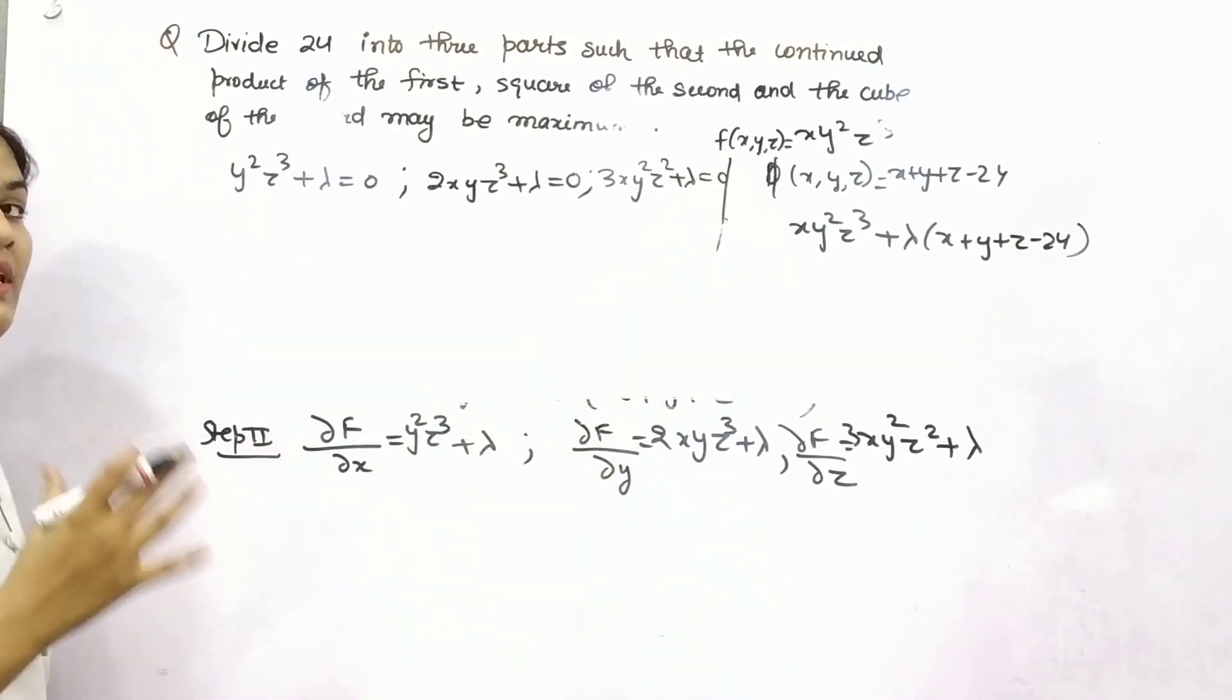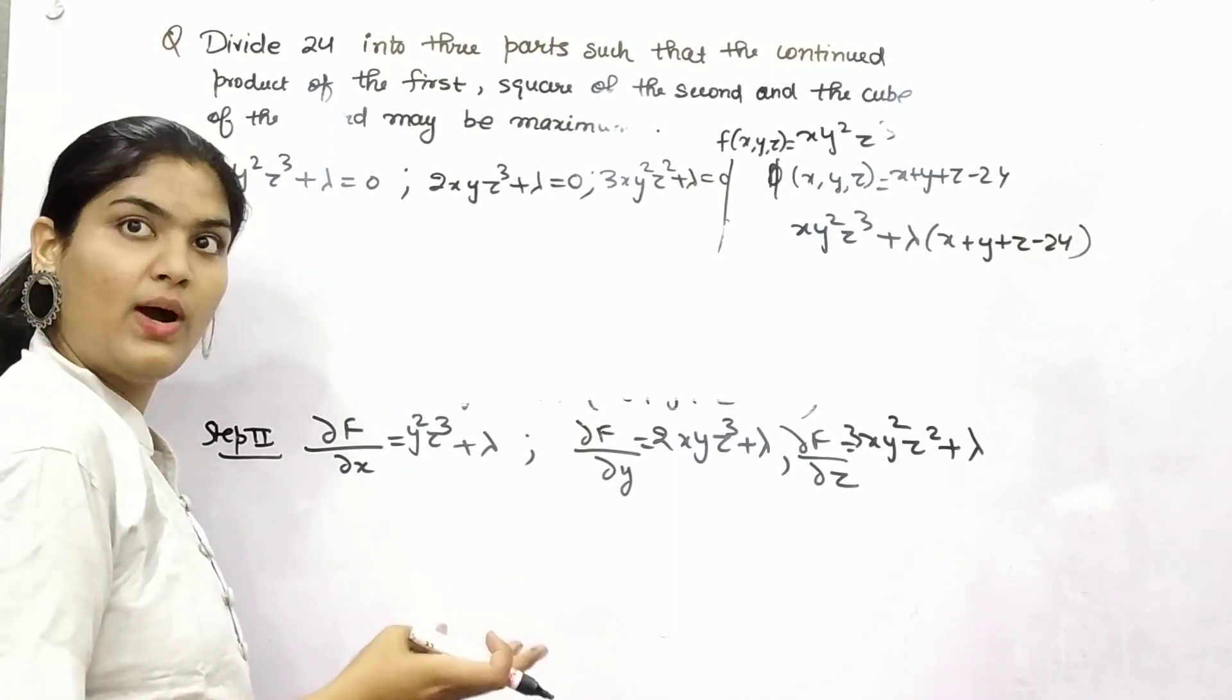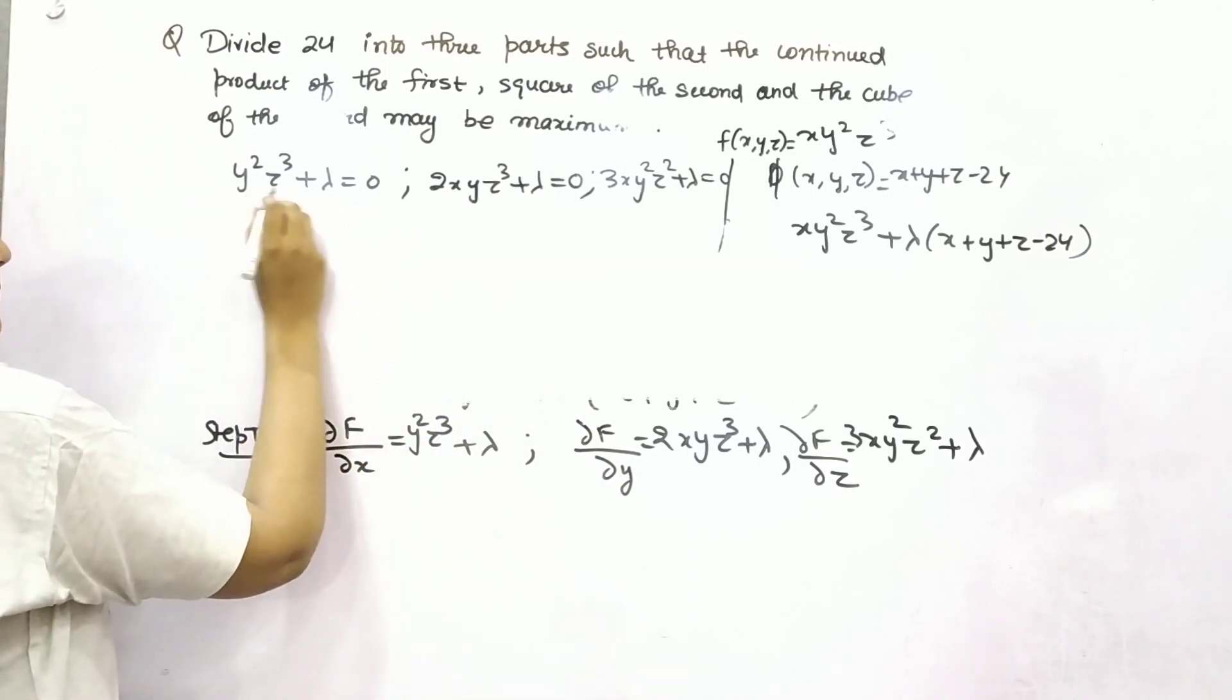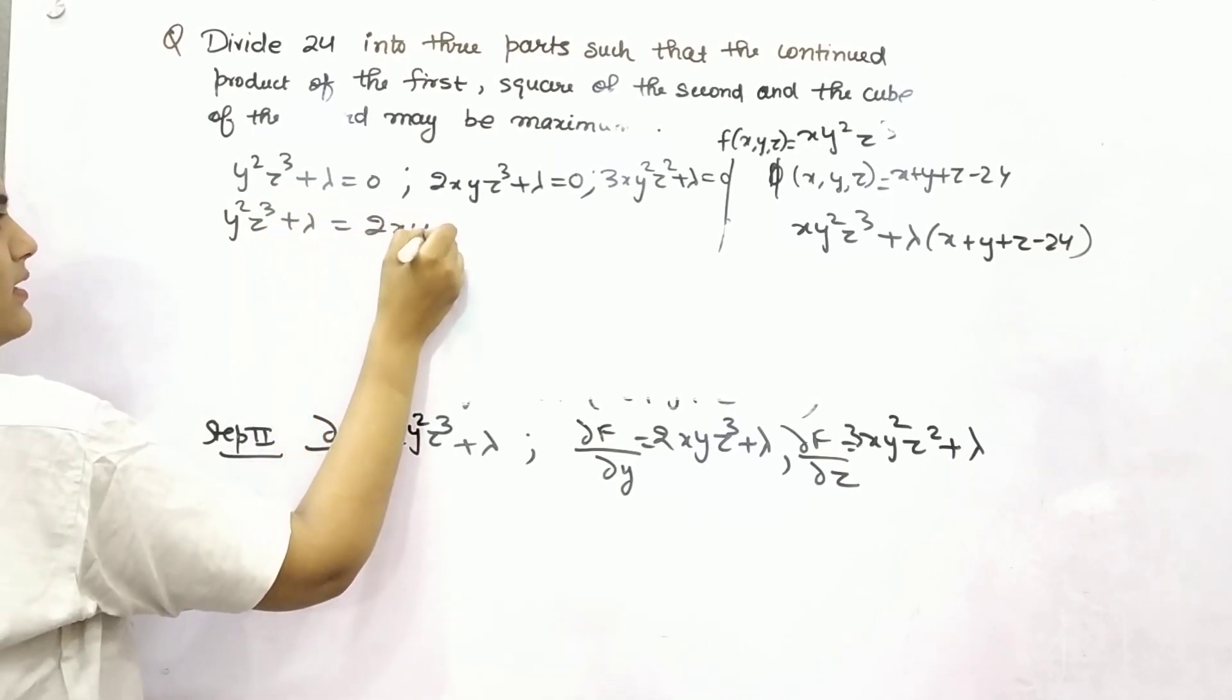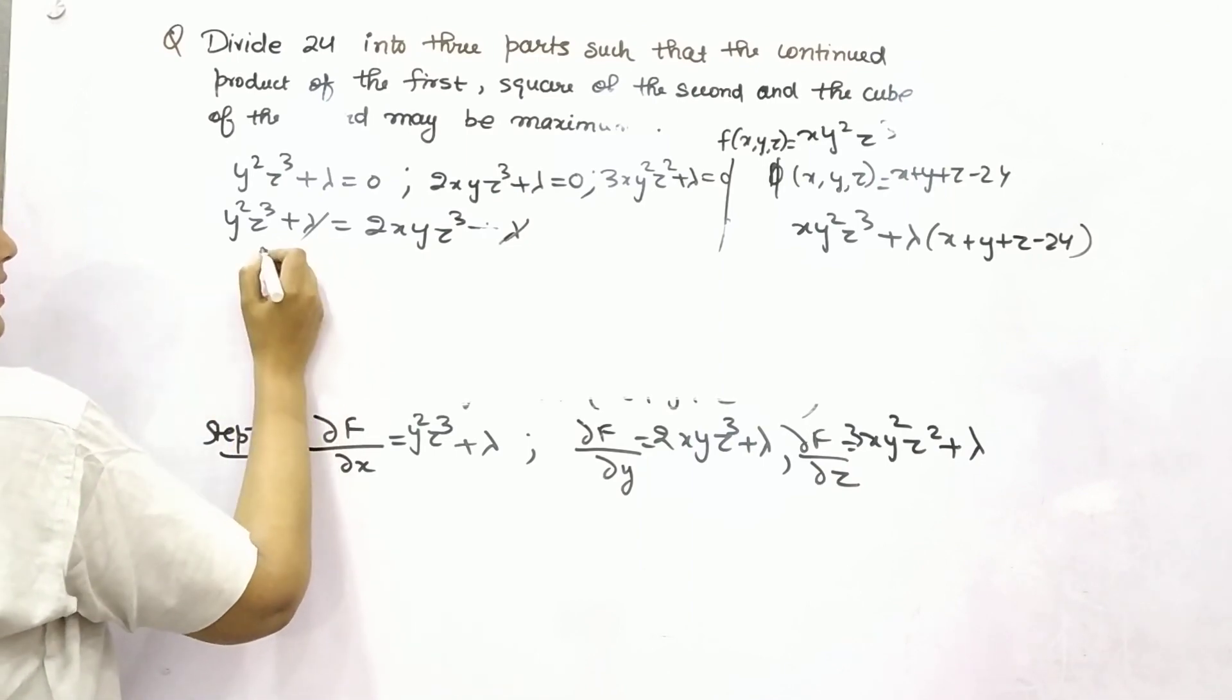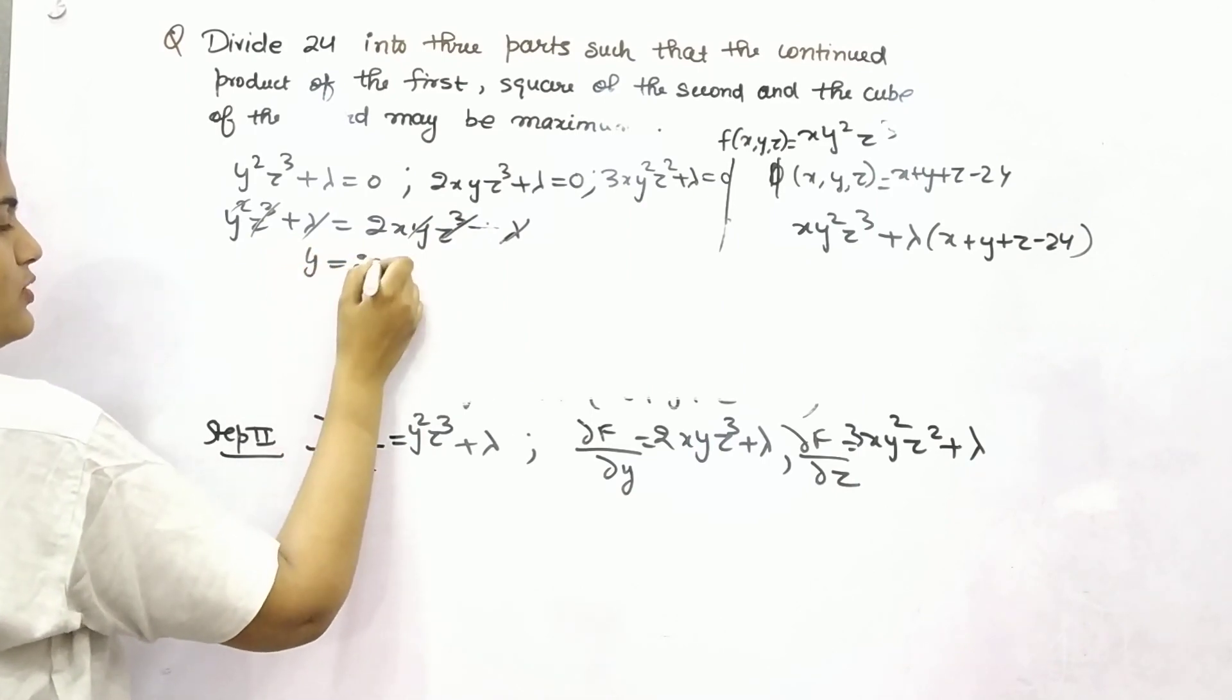Now you need to equate your... This is the part of your second step only. You need to find out the values of x, y, and z. So how you can equate them? See, both of these are 0, so left side will be equated. Lambda is cancelled with lambda. Then y with y, z³ with z³, y = 2x.